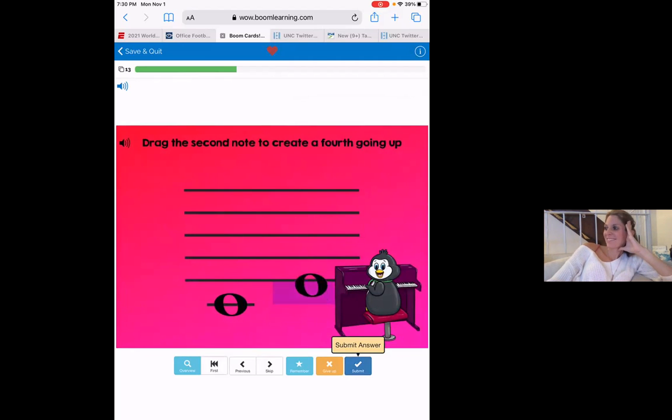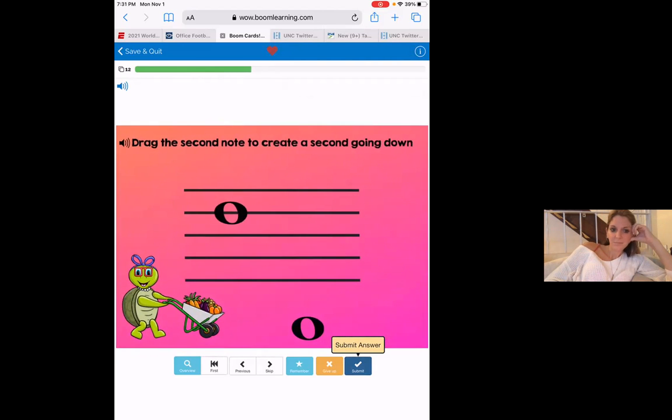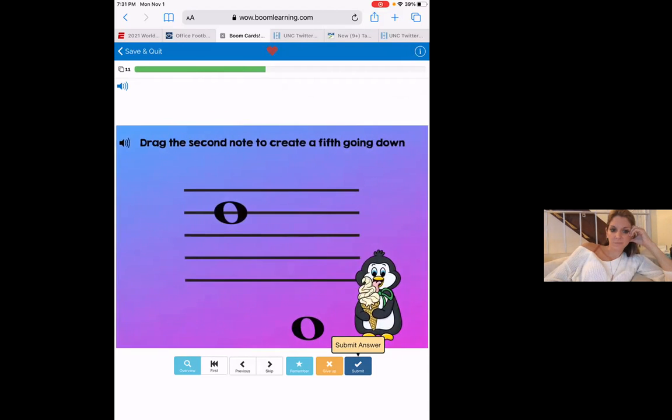A fourth. Okay, so fourths I always find ugly because it's like a line to a space or space to a line. It's kind of awkward. That's awkward. That's actually pretty because it's a line to a line. That's even, that looks really nice. Is it like that? That's too much, that's a fifth. So how do you make it a fourth? Yes, there you go. Nice! Yes, Jack, good.